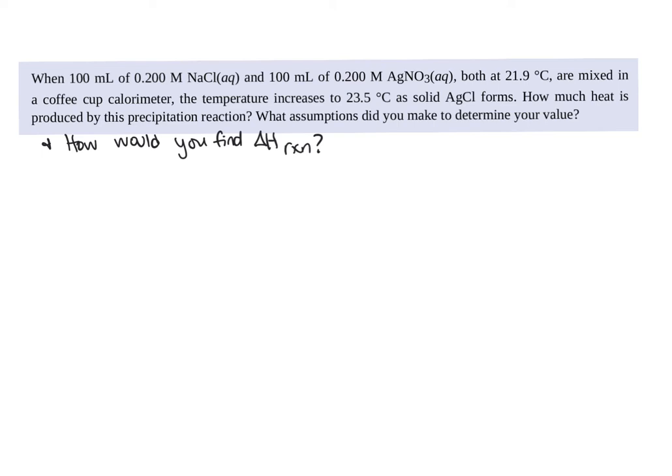Now, here is a question, a calorimetry question. So I'm not going to go through the whole thing, though you can certainly do the whole thing. But just some key components. You're given a volume and a molarity of an aqueous solution, some salt in water. Another volume, another molarity of silver nitrate in water. They are starting at 21.9 degrees Celsius, so that's the T initial.